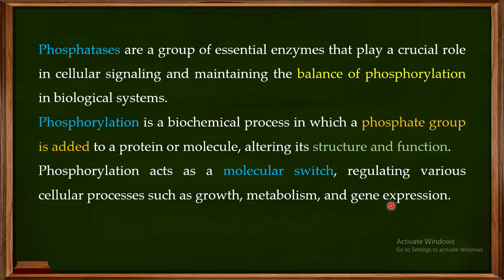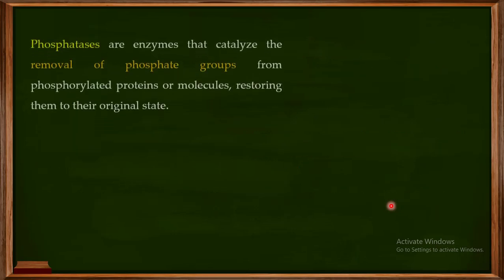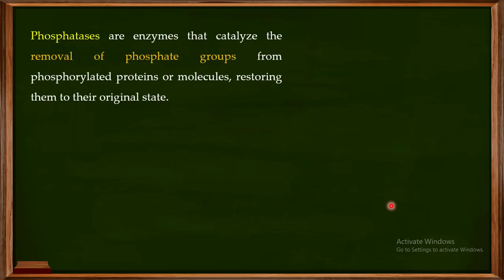When you want to turn on a particular protein or molecule, you can do phosphorylation. When you want to turn it off, you can again use phosphorylation, depending on the type of protein or molecule concerned. Phosphorylation is the addition of a phosphate group, and what phosphatases do is catalyze the removal of a phosphate group — thereby maintaining a balance of phosphorylation.